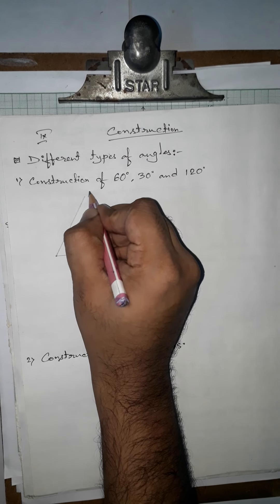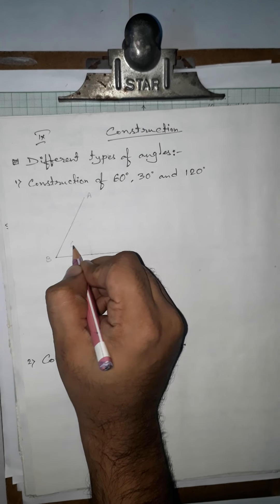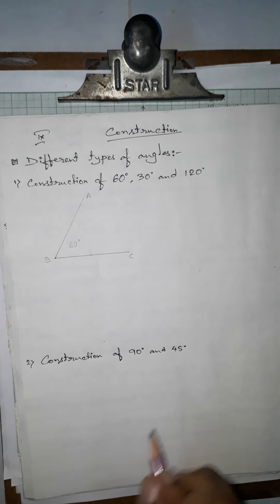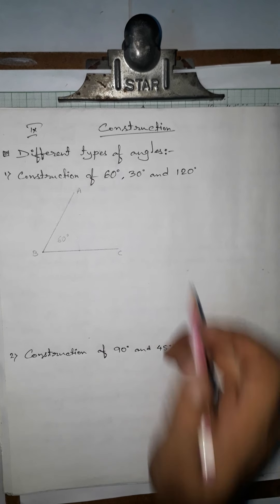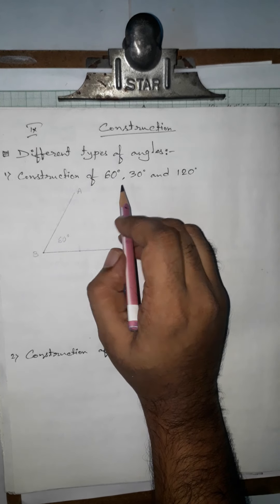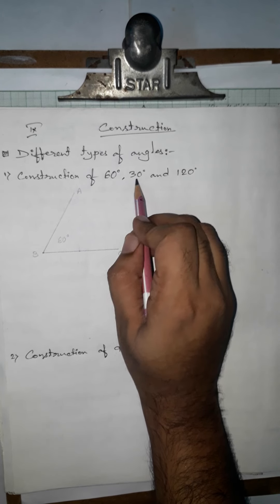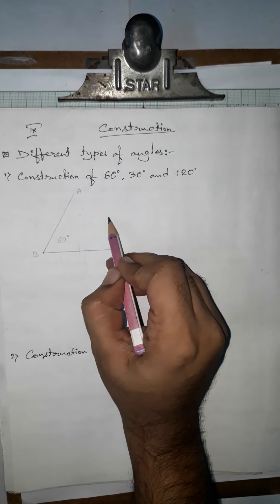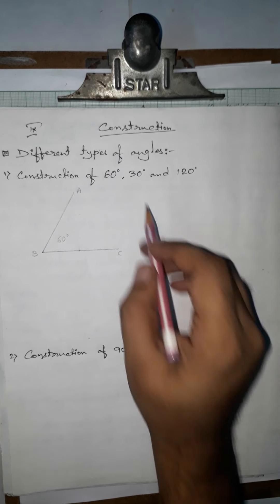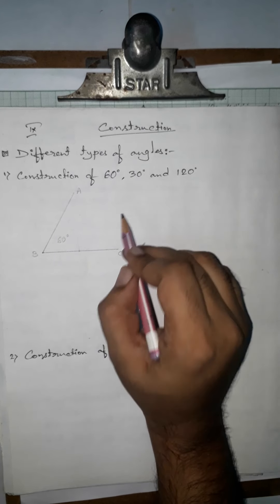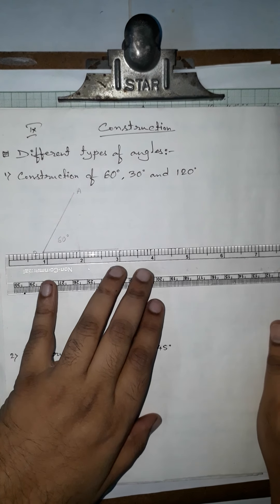If we name the points A, B, C, then angle ABC is 60 degrees. You can verify using a protractor. Now for 30 degrees: since 30 is half of 60, if we bisect the 60-degree angle, we will get the 30-degree angle.